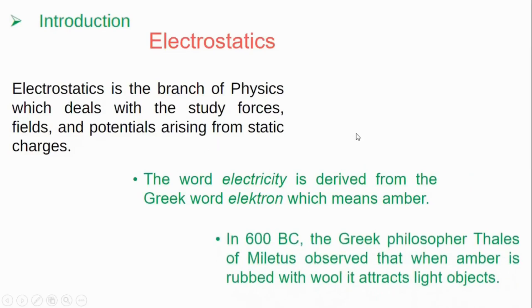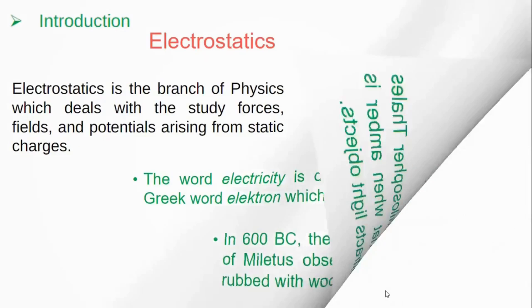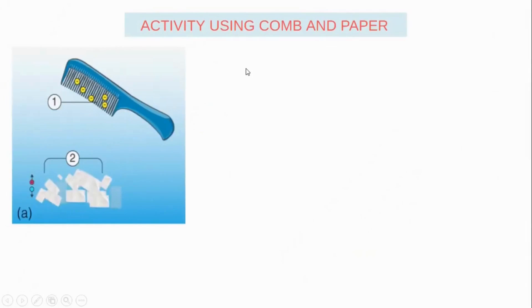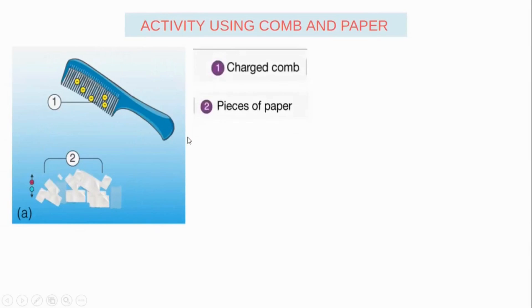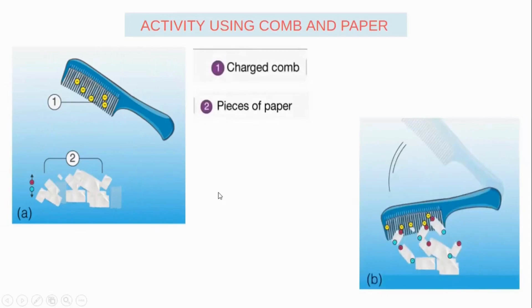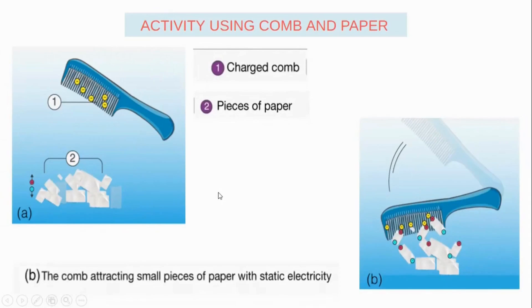Electrostatics was first observed by Greek philosopher Thales of Miletus, when he observed that amber rubbed with wool attracts light objects. We have one activity using a comb and paper to show how electrostatics was observed. We can charge a comb, and when this charged comb is brought near pieces of paper, the pieces of paper get attracted towards the comb, which is just because of static electricity.